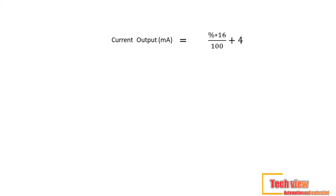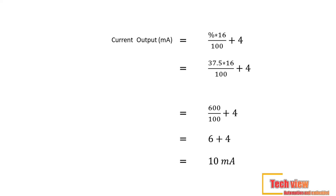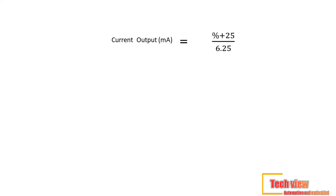Now let's apply this value to our current conversion formula: 37.5 percent times 16, divided by 100, plus 4. That equals 600 divided by 100, plus 4, which means 6 plus 4. So the result is 10 milliamps. Now we can find the milliamps output.